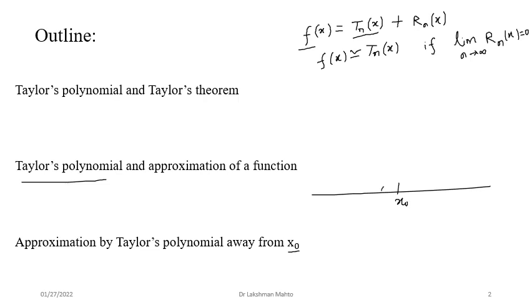The point x₀ is our given or initial point. There is a delta neighborhood around x₀, and we examine whether the approximation is valid if we go away from this delta neighborhood. Simply, we are dealing in a local neighborhood of x₀. If we try to go away from x₀, we need a different approach, which we will discuss here.